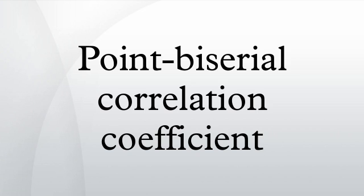Where u is the ordinate of the normal distribution with zero mean and unit variance at the point which divides the distribution into proportions n0/n and n1/n. As you might imagine, this is not the easiest thing in the world to calculate and the biserial coefficient is not widely used in practice.